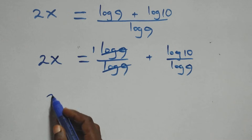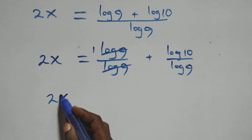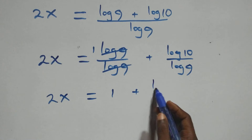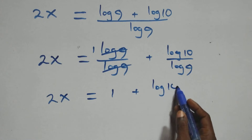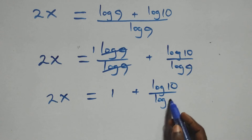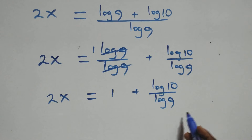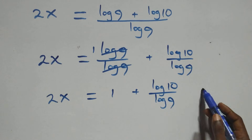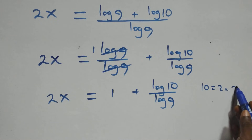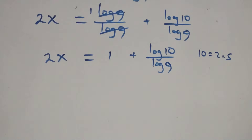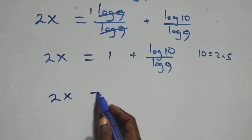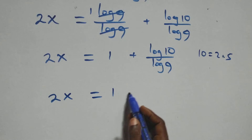So we have 2x equals to 1 plus log 10 over log 9. Then also here we can write 10 as 2 times 5, which implies 2x equals to 1 plus log of 2 times 5, over log 9.